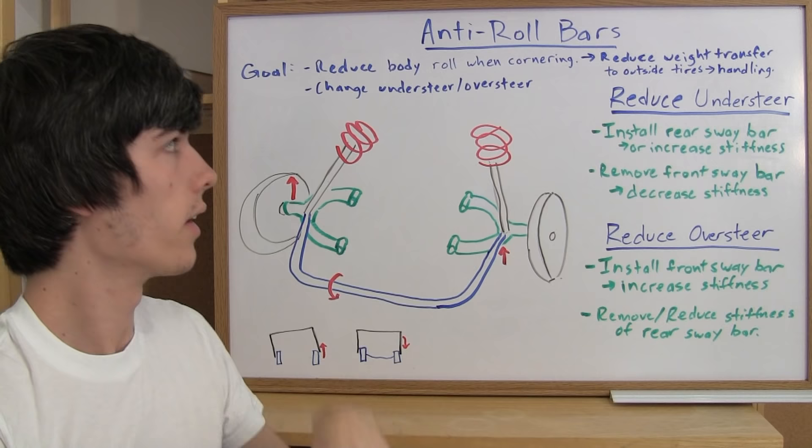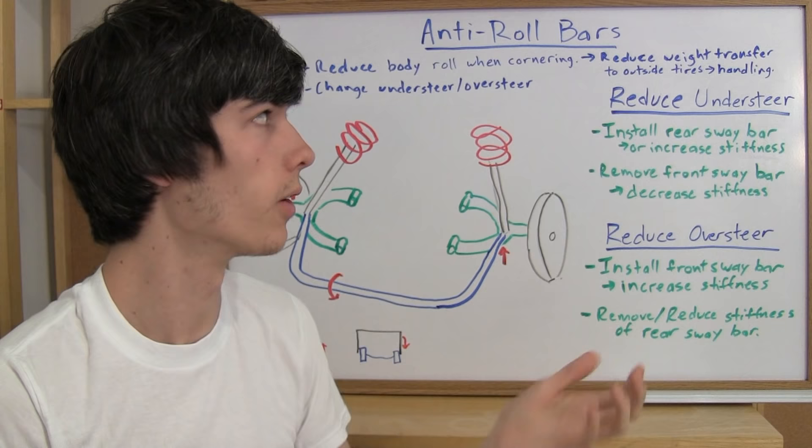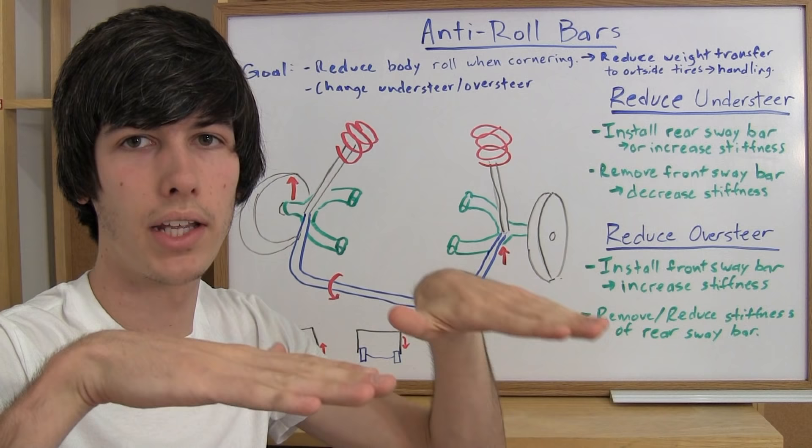Now the reason you want to reduce body roll when cornering, other than the obvious reason of you don't want to roll over, is that you want to reduce the weight transfer to the outside tires in the corner. By having more even weight distribution on all your tires, you'll have better handling.